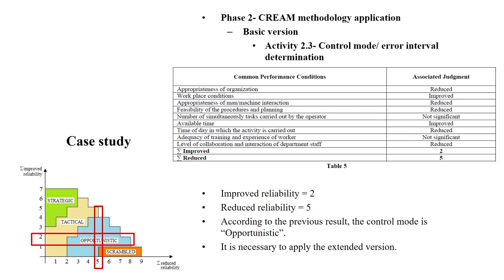Based on these results, the cross-section places us in the opportunistic bisection. It is therefore necessary to apply the extended version to get more detailed results. Up to this point is the basic version.